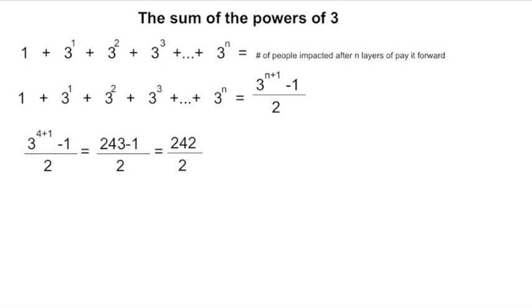So then we get 242 divided by two, which is 121. We can quickly verify that using the numbers we had earlier. One plus three plus nine plus 27 plus 81. That's 121.